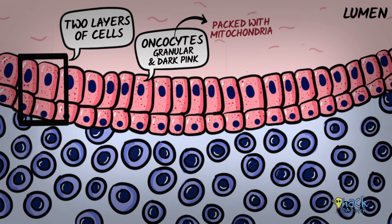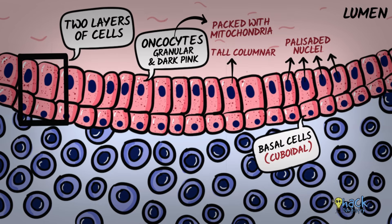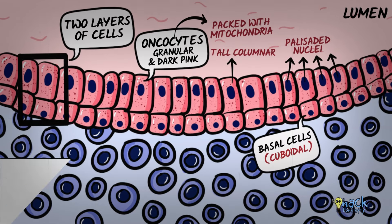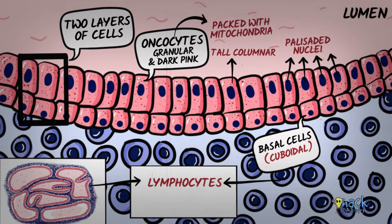The layer immediately next to the lumen comprises tall columnar cells with palisaded nuclei that are centrally placed, and the second layer of cells surrounding these luminal cells appear cuboidal and are called basal cells. The cystic spaces lined by oncocytic cells are surrounded by a lymphoid stroma comprising lymphocytes with occasional plasma cells and histiocytes. The stroma might sometimes harbor germinal centers.